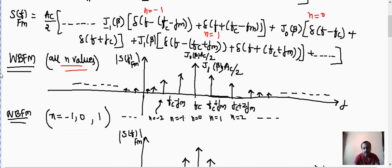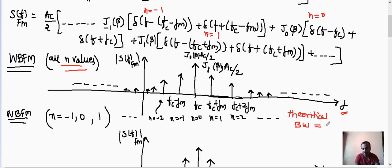What is the bandwidth of wide band FM? The spectrum exists from minus infinity to plus infinity, so the actual theoretical bandwidth of wide band FM is equal to infinity.